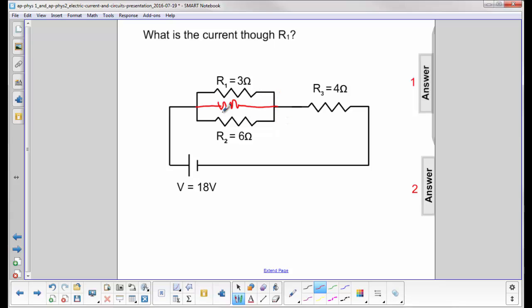And then we'll turn our eyes over to here. We'll find the voltage drop here, subtract that voltage drop from 18, find the voltage drop here, and then we can find the current.